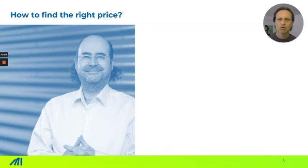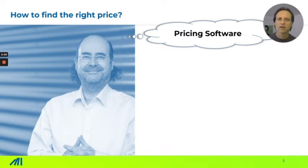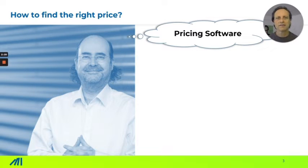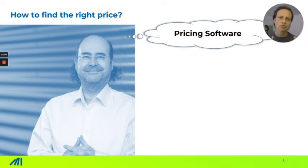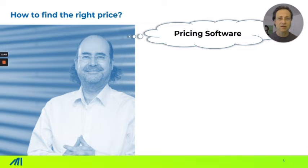How to find the right price — that's what Jordi is asking himself. First, he thinks about pricing software. But for pricing software you need data, and buying data for consumer brands can be quite expensive. And even if you have this data, you can only analyze prices which are already in the market, so you really cannot find broader prices and find out where your sweet spot is.